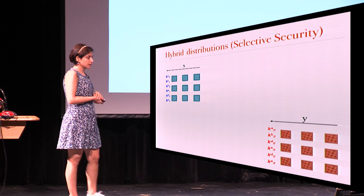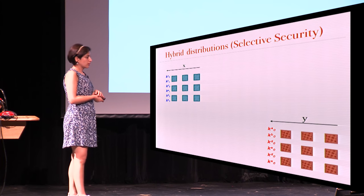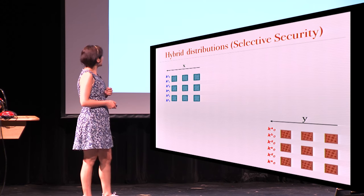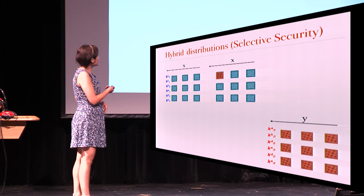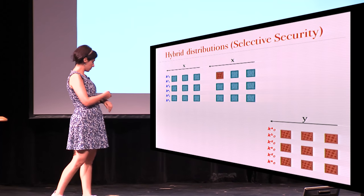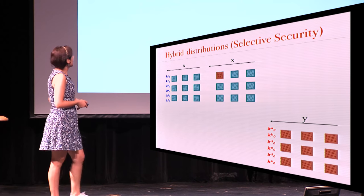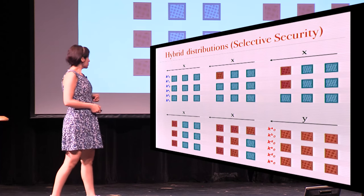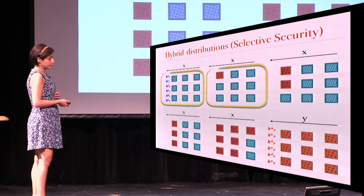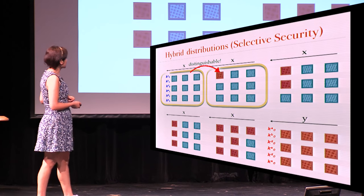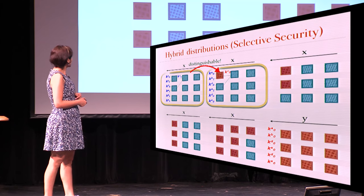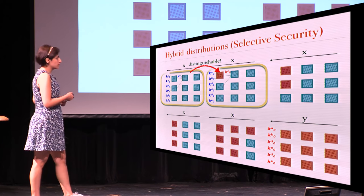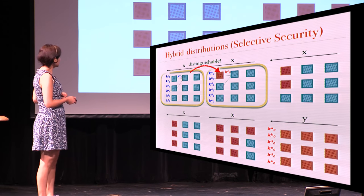Now we have to show that these two distributions are indistinguishable. We start with hybrid arguments — I'm going to define some distributions that are a hybrid of both the simulation and the real garbling — changing the gates one by one from the real to the simulated, until all of the circuit is converted. This would be fine if these two were actually indistinguishable, but they are in fact totally distinguishable, because one of them is always outputting 0 and the other outputs something dependent on what the input was. They don't even compute the same thing sometimes, but we want them to be indistinguishable.